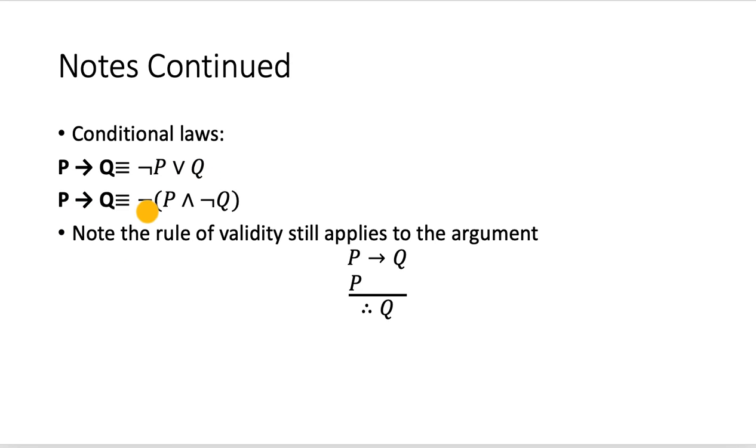And P implies Q is the same thing as not, the quantity, not P and not Q. But I need you to note the rule of validity still applies to the argument. For P implies Q, P, therefore Q.